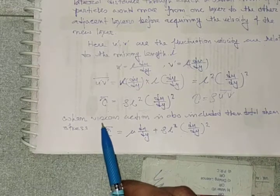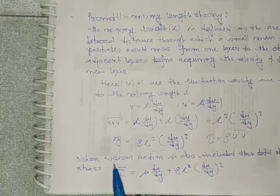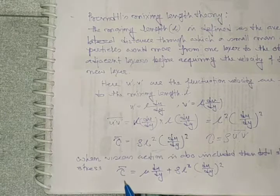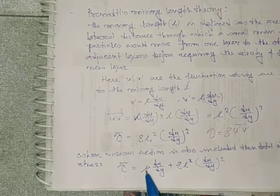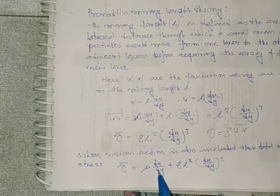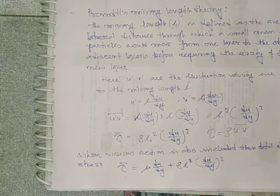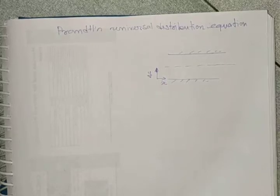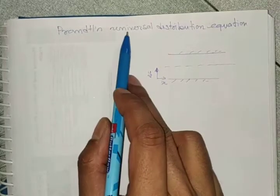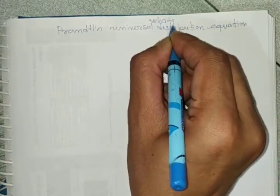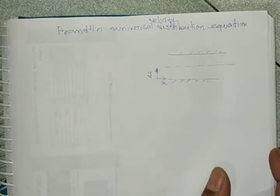If we also consider the viscous term, the full equation becomes τ = μ(du/dy) + ρL²(du/dy)², and this is given by the Prandtl mixing length theory.